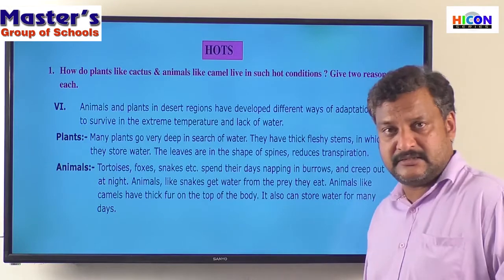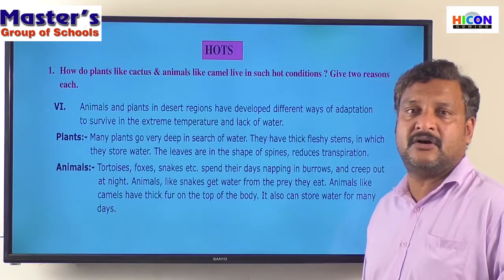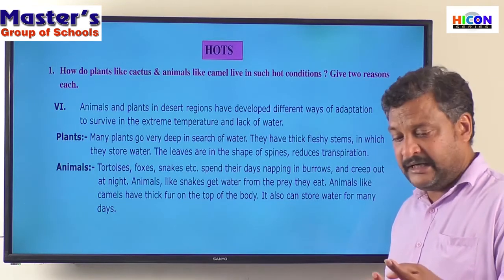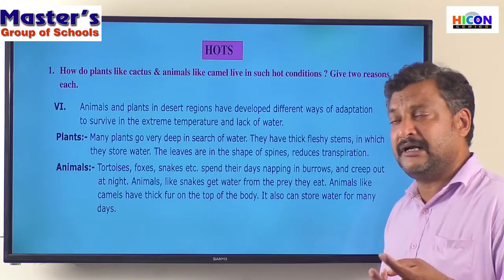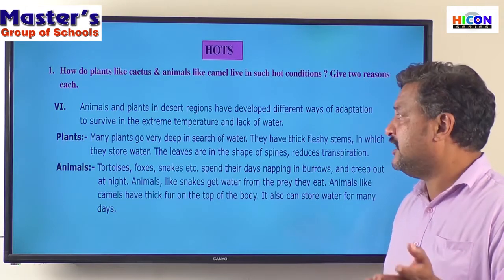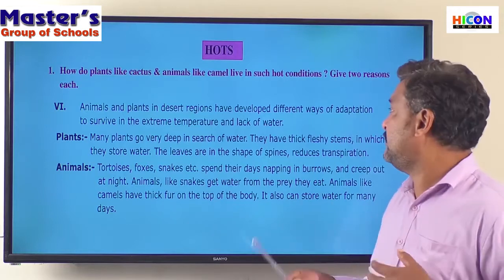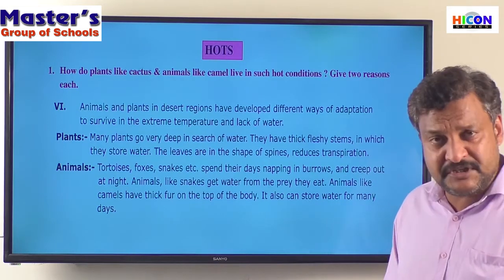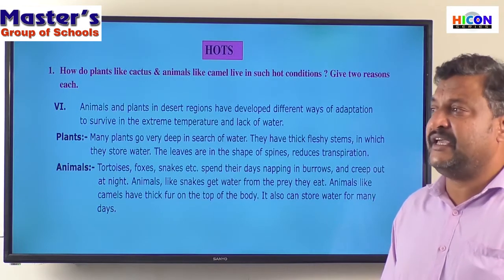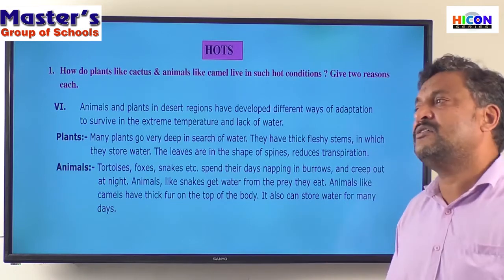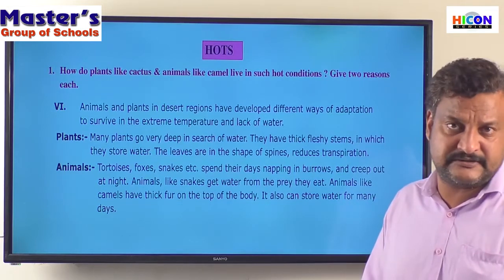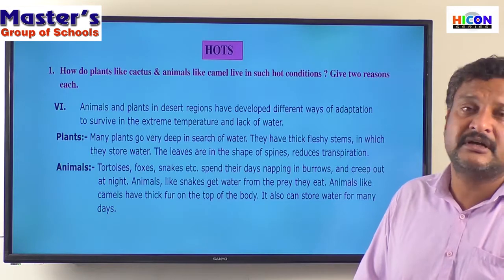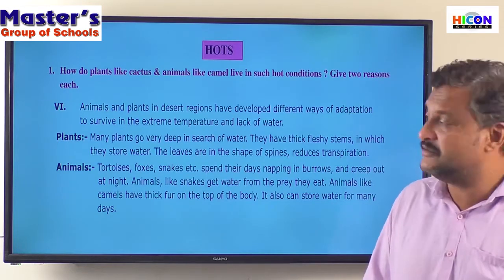Plants like a cactus or a baobab, and animals like a camel, rattlesnakes, or kangaroo rats have developed different types of adaptation. Adaptation means some changes in themselves which are not seen in other plants and animals, and that is how they are able to survive in the extreme climatic conditions of a desert.